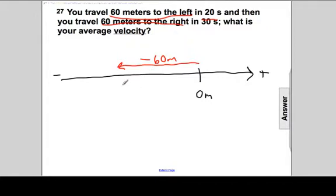And then you move 60 meters to the right like that. That is positive 60 meters. So the question is, what is the velocity? And by the way, that would take 30 seconds for the second leg.